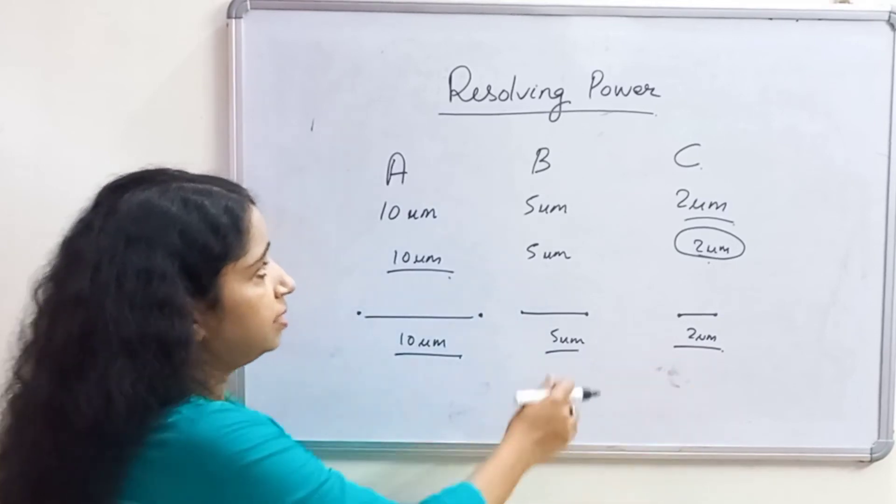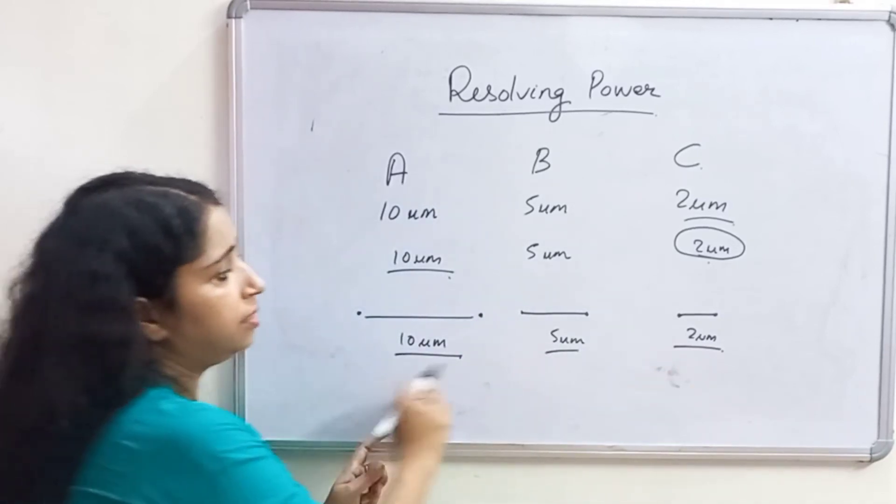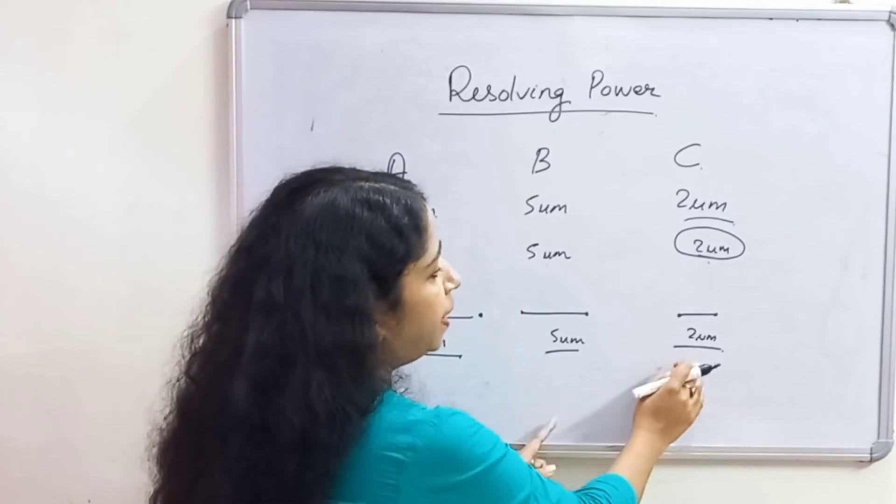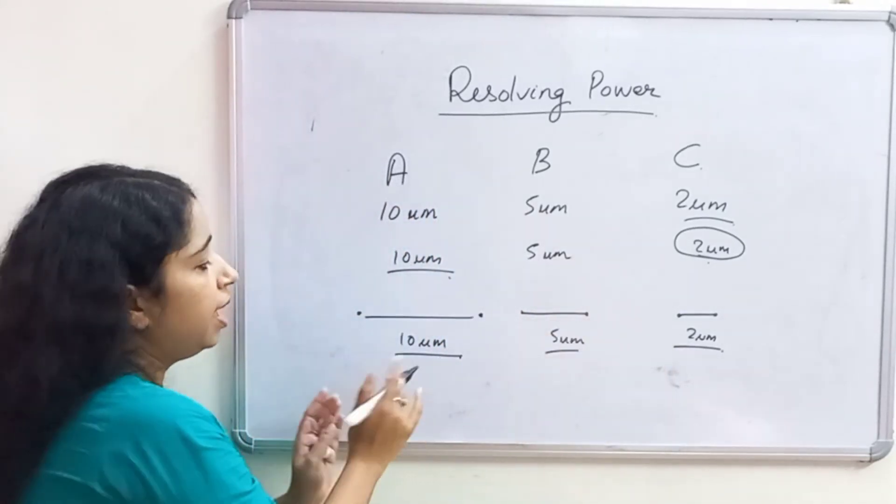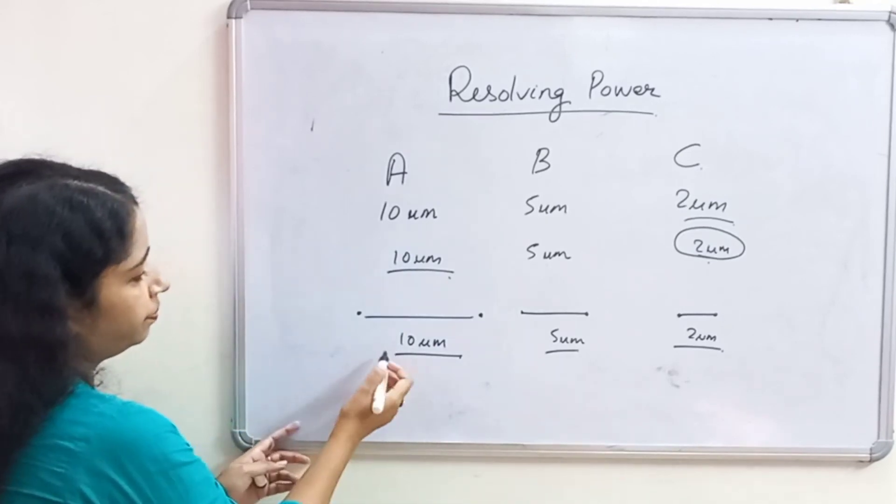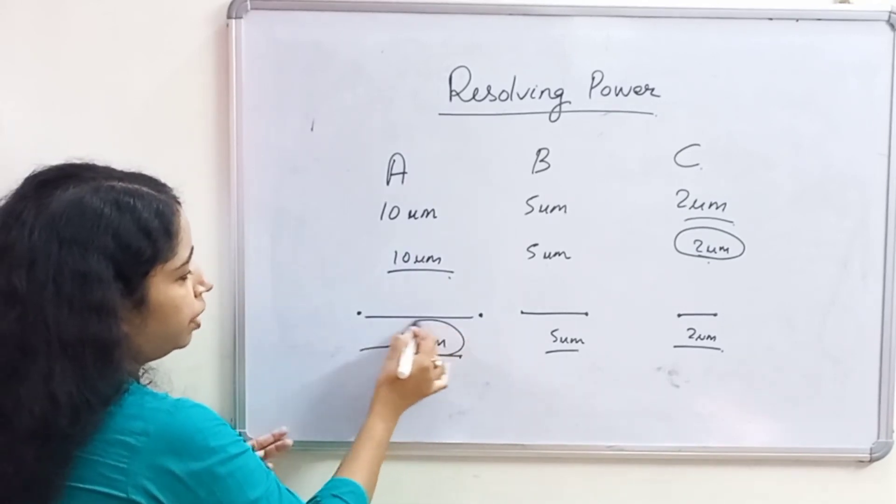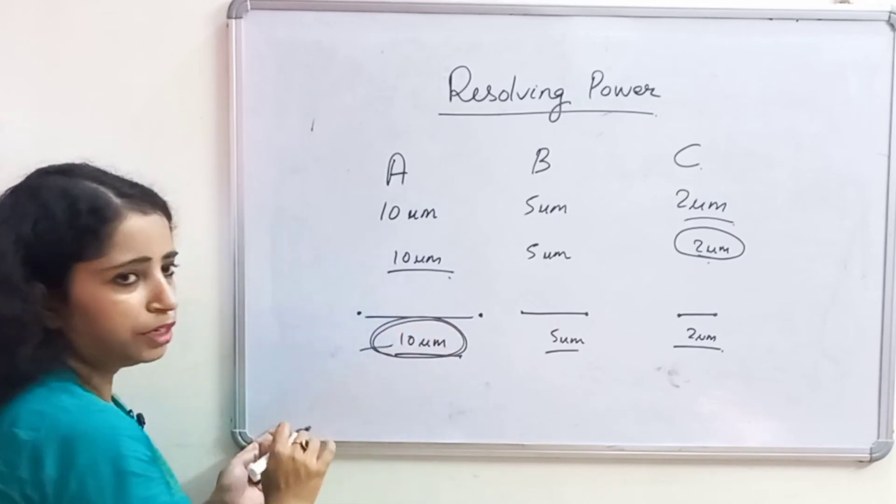It is the best. It has best resolving power among all these three. And A has highest limit of resolution, 10 micrometer.